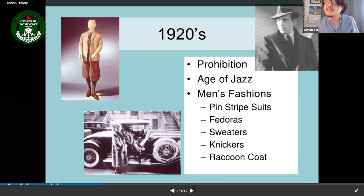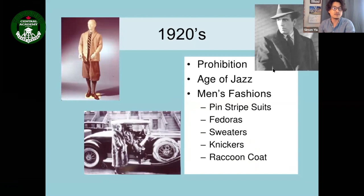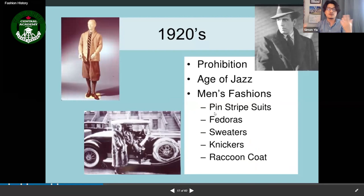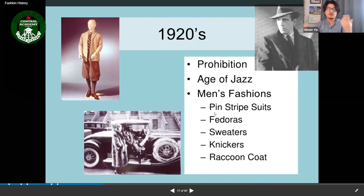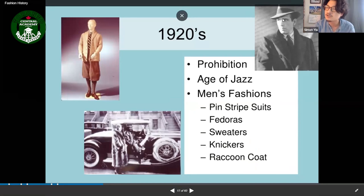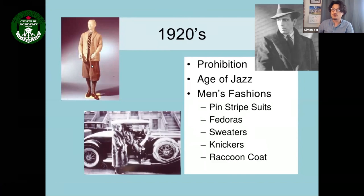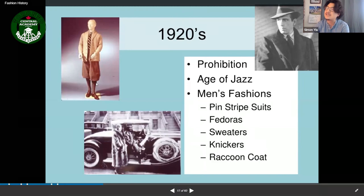In the 1920s — the Prohibition age of jazz — men's fashion changed noticeably. Suits became more detailed with pinstripes, fedora hats, sweaters, and knickers — short pants that came over the knee length, not as short as shorts.